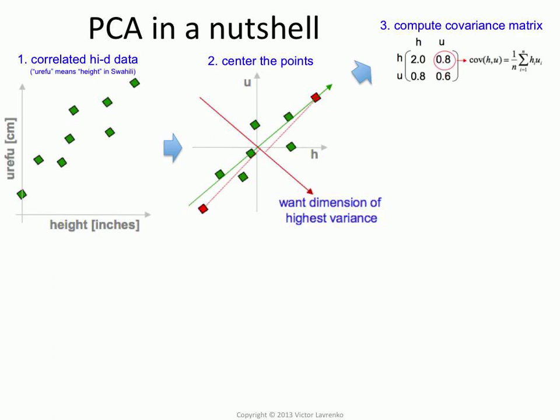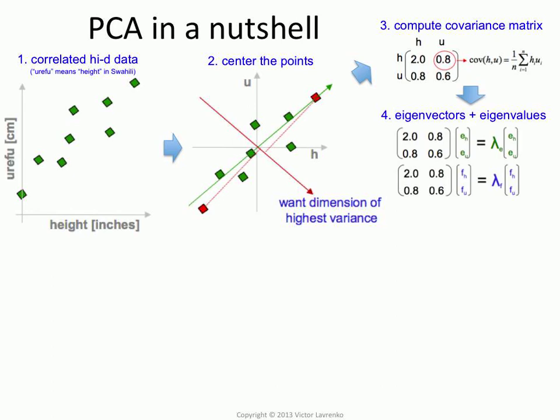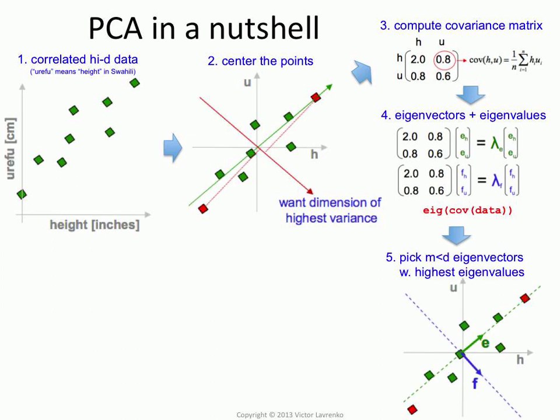How do we do it? We center the points, compute the covariance matrix which tells us how the attributes are related to each other, and find the eigenvalues and eigenvectors of the covariance matrix. By the way, if you're doing it in a godly language like MATLAB, it's just like that.